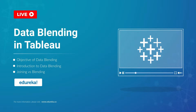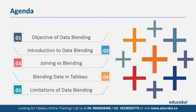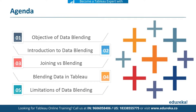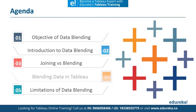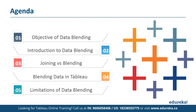Before we begin, let's discuss our agenda for today. First, we're going to talk about the objective of data blending. Then we're going to talk about what data blending essentially is and how it works in Tableau. Then we're going to discuss a concept called joining and see how it is different from data blending. Then we're going to see a very short demo with a few simple steps. And finally, we're going to discuss a few limitations in this process. So without much ado, let's get straight to the module.